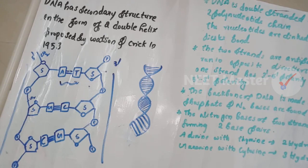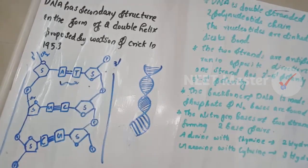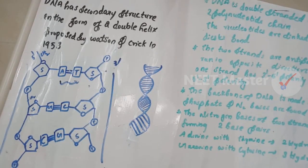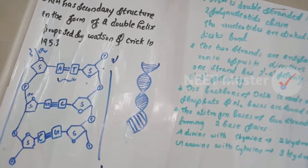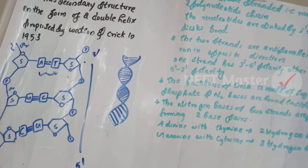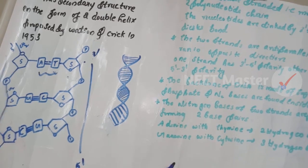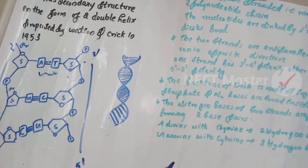The two strands are anti-parallel: one runs 5' to 3' and the other 3' to 5'. The backbone of DNA consists of sugar and phosphate groups. The nitrogen bases are paired: adenine with thymine (2 hydrogen bonds) and guanine with cytosine (3 hydrogen bonds).